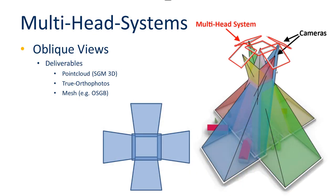Another possibility is a multi-head camera system. Instead of flying a single Nadir camera, a multi-head system uses multiple cameras not only looking straight down but also at angles — typically 40 degrees, though other configurations exist. All photos are taken in a synchronized moment, each camera having exact GNSS and IMU information and its own individual camera calibration.